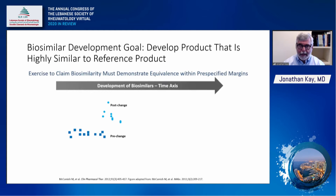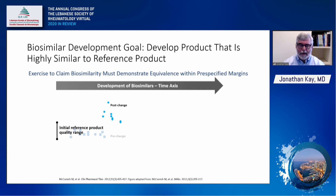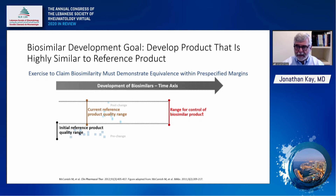To develop a biosimilar, the manufacturer purchases commercially available lots of the reference product and subjects them to many different analytic assays — both chemical and functional assays, as well as animal assessment of toxicity. The range for control of the biosimilar is based on the current reference product quality range and is narrower than the reference product quality range over time. So the biosimilar has tighter proven acceptable ranges of variation — at least the same or narrower than the reference product.